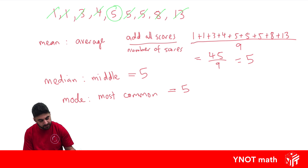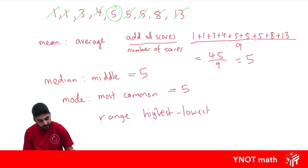The range is also easy. The range is just the highest score minus the lowest score. The highest score is 13, the lowest score is 1. So 13 minus 1 is 12.